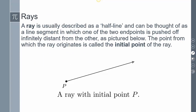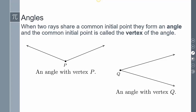We're going to start with the ray. A ray is half a line — it starts with a point and extends on forever in the other direction. This would be a ray with initial point P. Now when two rays share a common initial point, it creates an angle, and that common initial point is called a vertex.